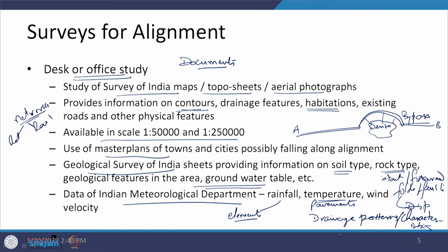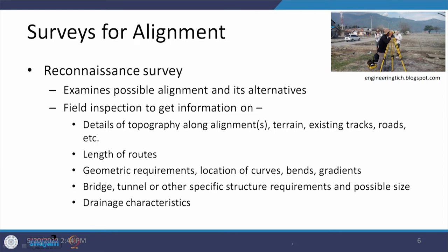We then create possible alignment lines through the development or open area. Going from A to B, it can be straight, or another route, or yet another option — so whatever possibilities exist as options 1, 2, 3, and so on. Another aspect is to verify at ground level whether the information from those sheets is still correct or has changed over a period of time, since those maps are created at certain intervals and not updated daily.